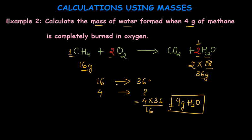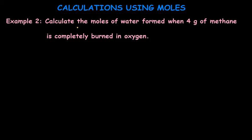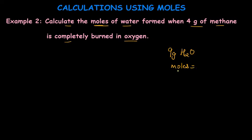Let's see the next example using moles. The question is the same but asks: calculate the moles of water formed when 4 grams of methane is completely burned in oxygen. We already calculated that 9 grams of water was produced. We can convert this to moles using: moles = mass ÷ MR, so 9 ÷ 18 = 0.5 moles of water. But we can also calculate it directly using a mole method.